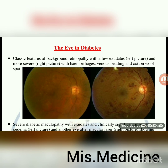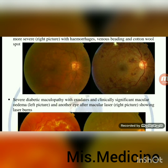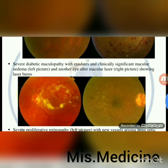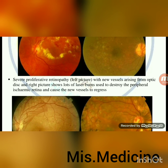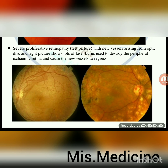The eye in diabetes: classic features of background retinopathy with a few exudates (left picture) and more severe in the right picture — hemorrhages, venous beading and cotton wool spots. Severe diabetic maculopathy with exudates and clinically significant macular oedema (left picture) and another eye after macular laser (right picture) showing laser burns. Severe proliferative retinopathy (left picture) with new vessels arising from optic disc; right picture shows laser burns used to destroy the peripheral ischemic retina and cause the new vessels to regress.